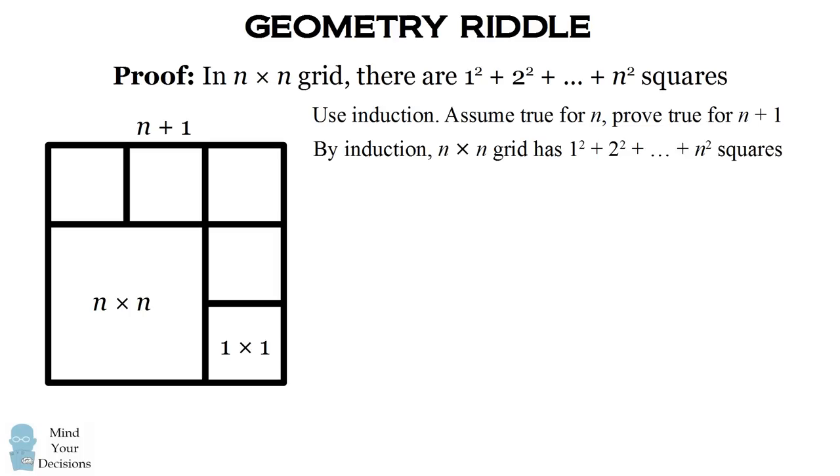By the induction hypothesis, the n by n grid has a total number of squares of 1² + 2² + ... + n². So now we need to see the number of new squares we can create by the squares we've added on.